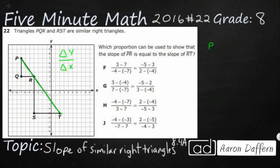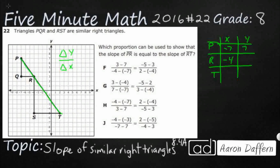Let's look at our x and our y for each point. Point p has an x of negative 7 and a y of 7. Point r has an x of negative 4 with a y of 3. Point t has an x of 2 and a y of negative 5. When we're looking at slope, that's the change in y over the change in x — the change in the two y-coordinates over the change in the two x-coordinates.